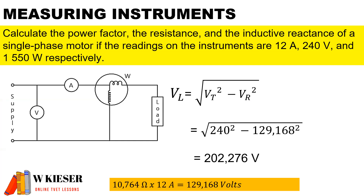Now to calculate the inductive reactance — remember this is an AC circuit, not a DC circuit — to calculate the volt drop across the inductor, it will be the square root of the supply voltage squared minus the volt drop across the resistor squared. The volt drop across the resistor is the resistance in the circuit multiplied by the current in the circuit, which means the voltage across the resistor is 129.168 volts.